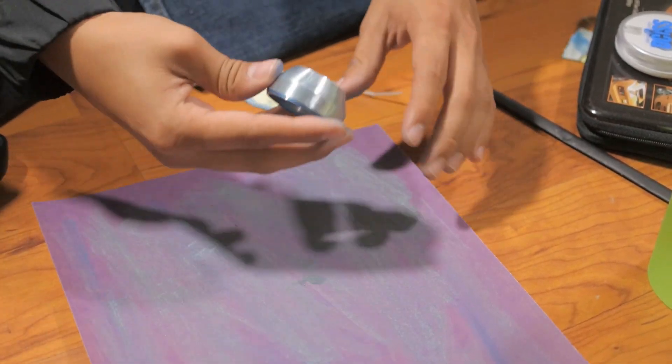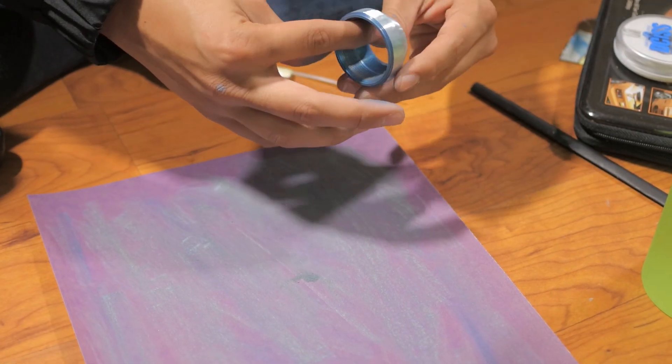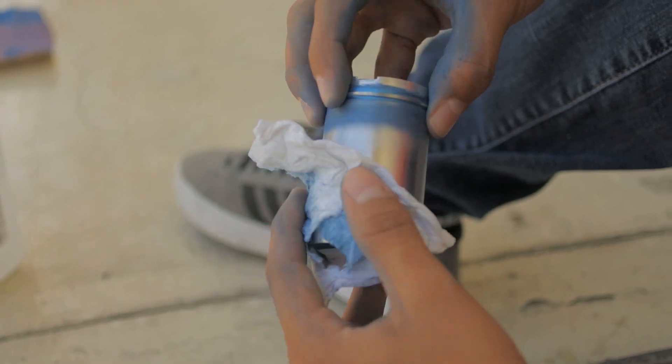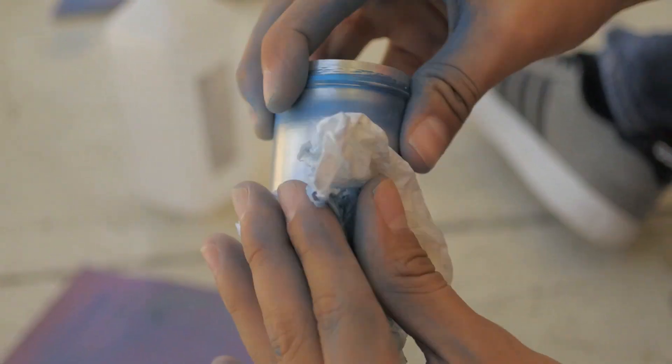When sanding, we occasionally used a wet paper towel with isopropyl alcohol to remove any paint dust that was still on the body. Some tips we would recommend would be to sand in a constant pattern and direction.